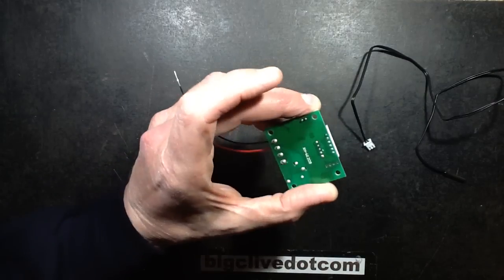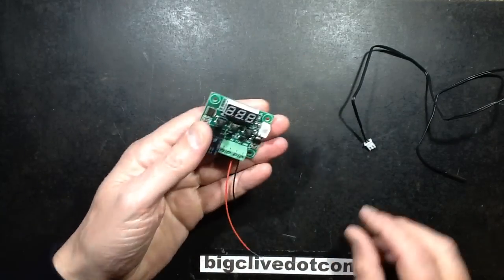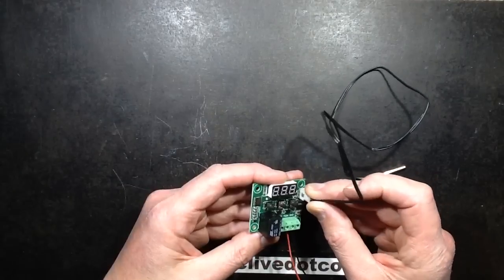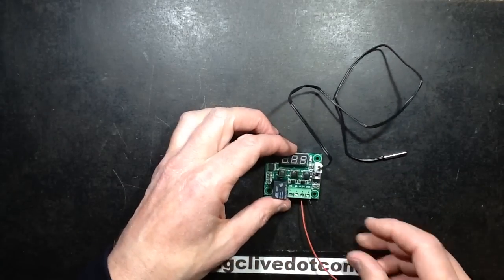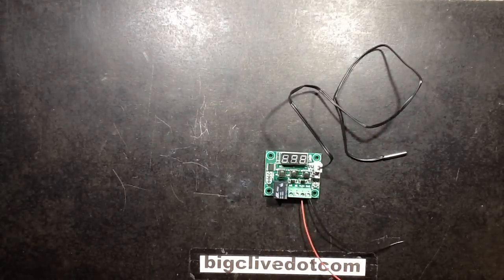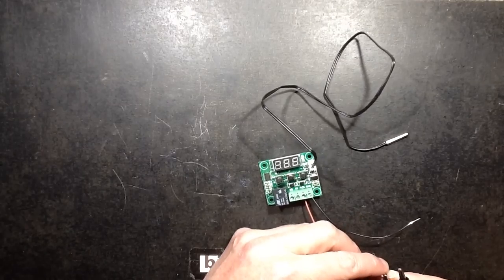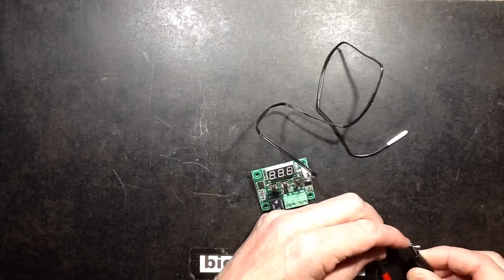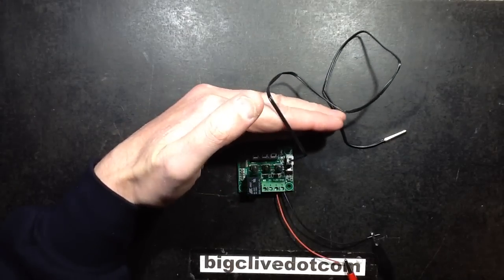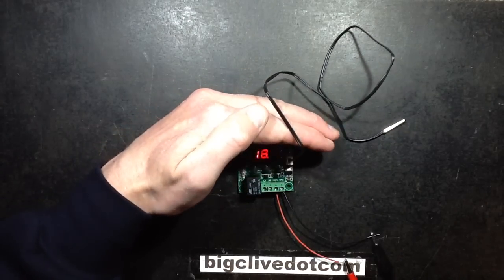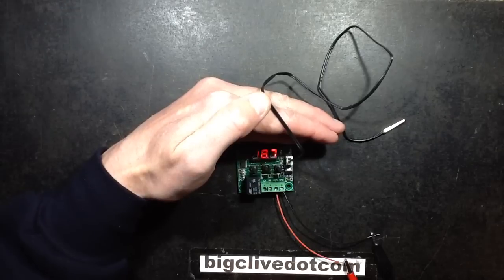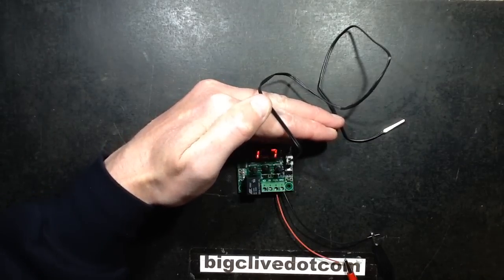So that's about it. It's quite nice, quite robust little units. So let's plug it in and we'll try it out. Now this will look a bit flickery because it's a multiplex display. So turning it on, and it's displaying the current temperature which in this case is 18.7 degrees centigrade.